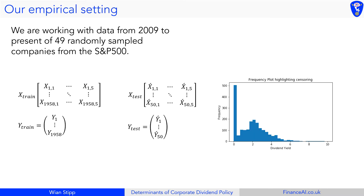This is the data we're working with: data from 2009 until present for 49 randomly sampled companies from the S&P 500. You can think about whether this is going to cause any bias, but that's the data we're working with. I've split it so that we have just under 2,000 training examples and 50 examples for testing.